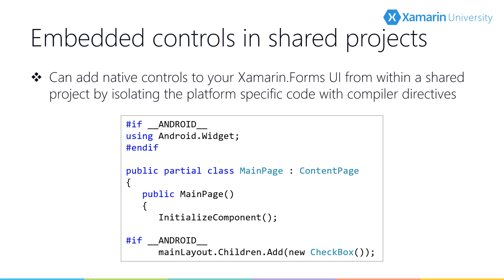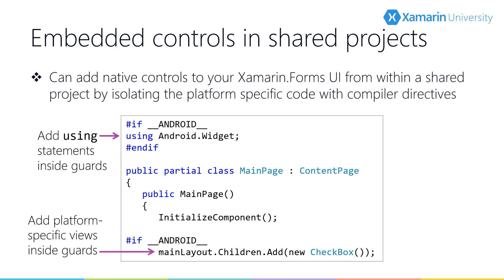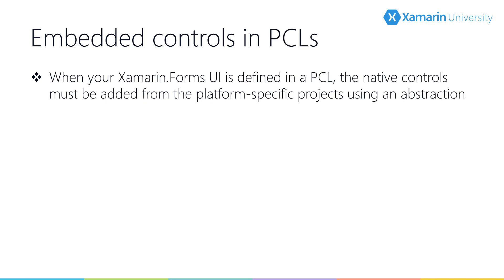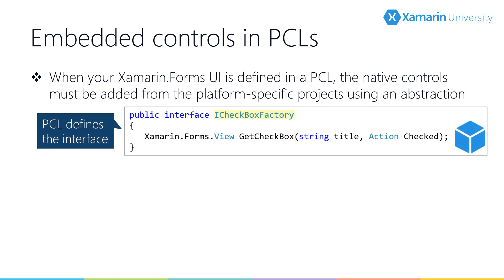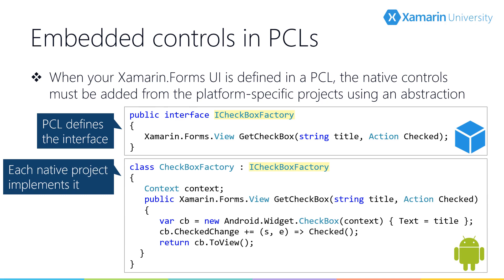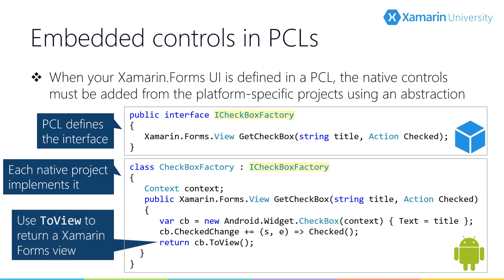Because the extension methods are platform specific, they can't be called within a PCL or a .NET standard library — they must be called from the platform-specific projects. One option is to define the UI in a shared project, bring in platform-specific using statements using compiler directives, and create and use the platform-specific native control, again wrapped in compiler directives. If you prefer a portable class library or .NET standard library, you can use an abstraction such as defining an interface for a factory method, implementing it on each platform, and using something like the Xamarin Forms dependency service to reach the platform-specific code.